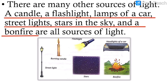These things are very important because without them we cannot get light. But all these sources are not the same — some are natural sources of light, whereas others are artificial, meaning man-made. Please write down the names of the sources of light: a candle, a flashlight, lamps of a car, street lights, stars in the sky, and a bonfire.